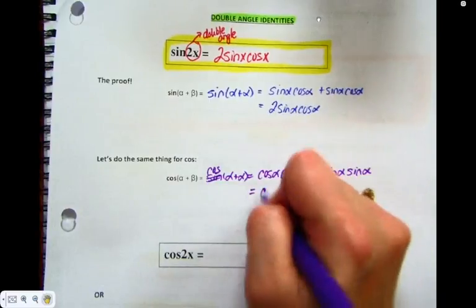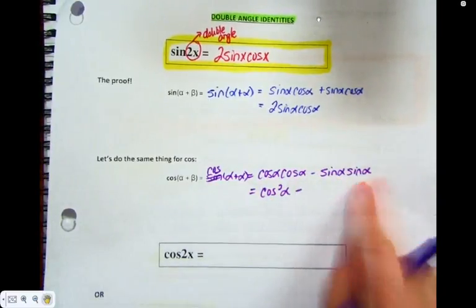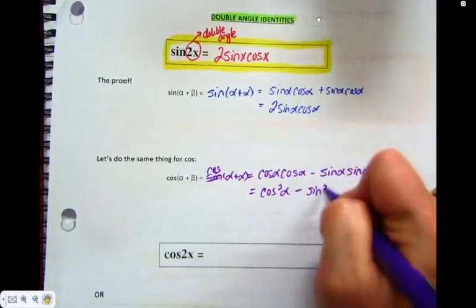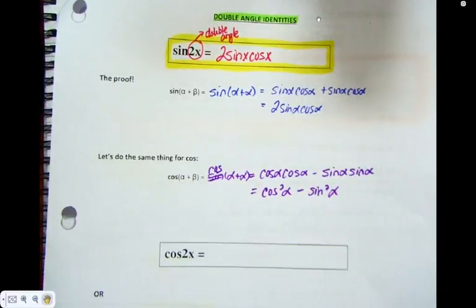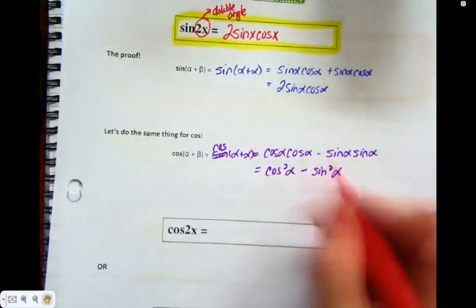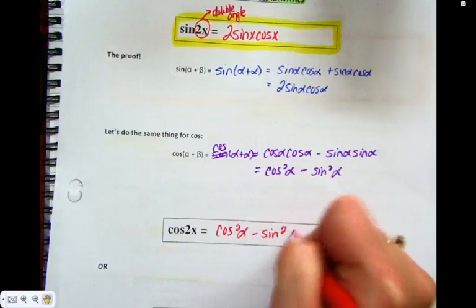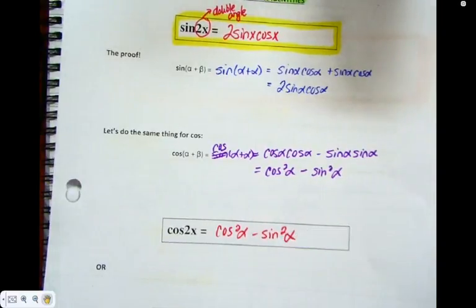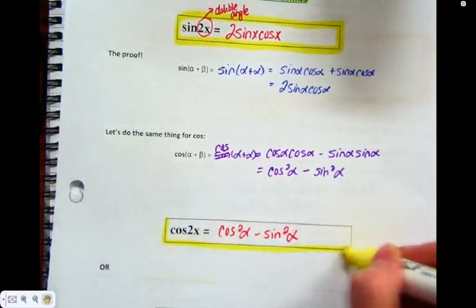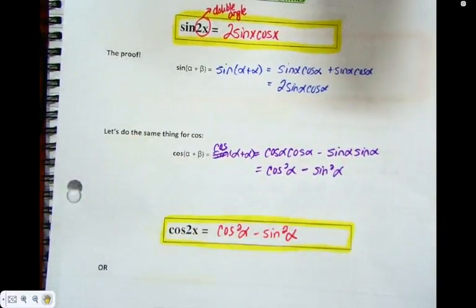Simplifying: cos times cos is cos squared, so I get cos squared alpha. And sine times sine is sine squared alpha. So the formula for cos 2x is cos squared alpha minus sine squared alpha. I would pause the video and add that to your index card as well.